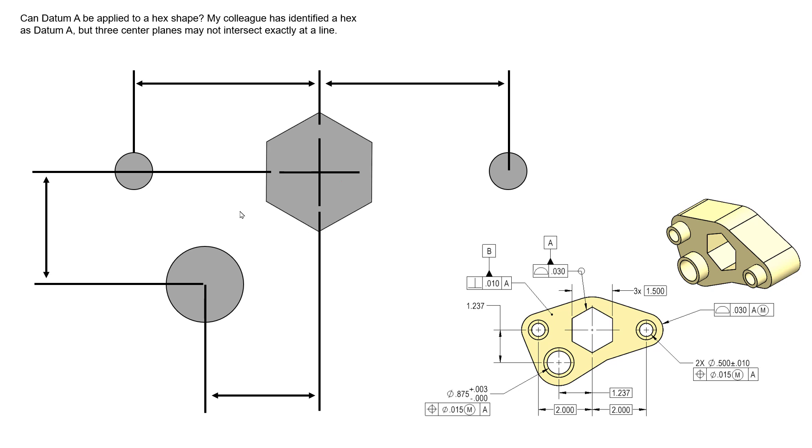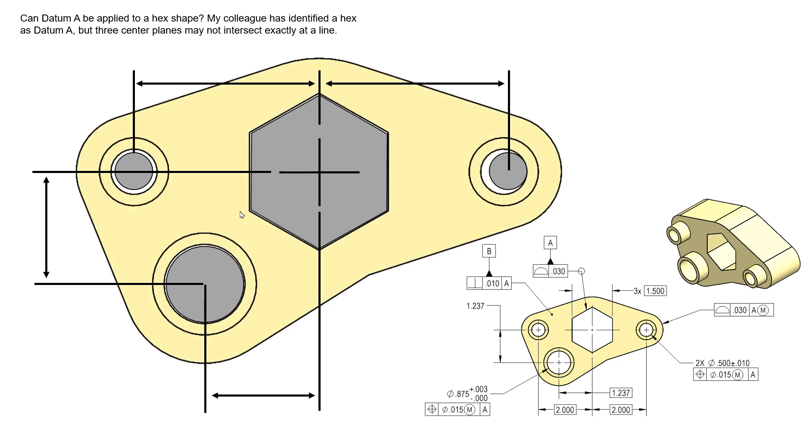Again, it's always easier for me to picture the actual gauge that might be designed. So if we're designing the gauge that would check this part, the datum feature simulator—since we're not modified at MMB—would have to be a simulator that expands outward and engages the irregular surface of that hexagon shape. And then as soon as it engages fully and it can't expand anymore, we've established our origin for most of our measurements that reference this datum feature as a primary datum feature A.